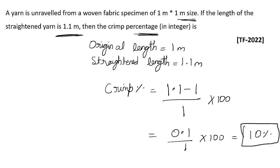This is a direct question — you just need to know what crimp percent is and how to calculate it. It is always based on the original length, and it is the difference between the straightened length and the original length.